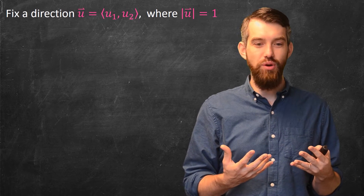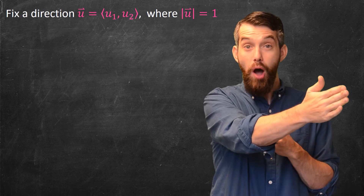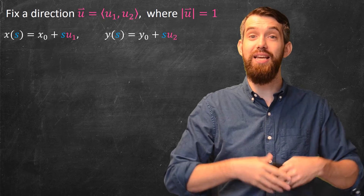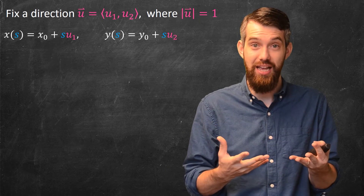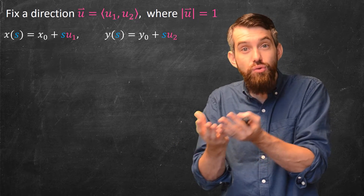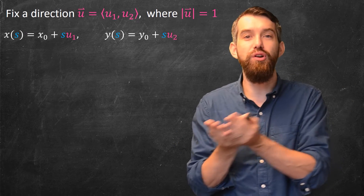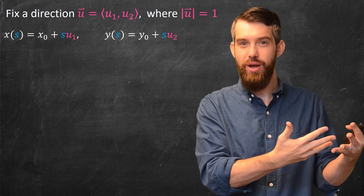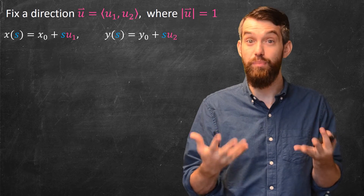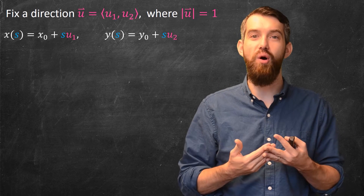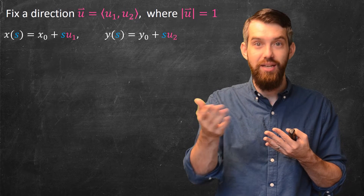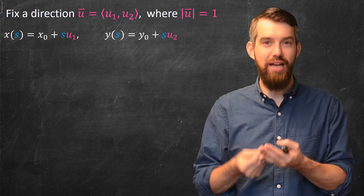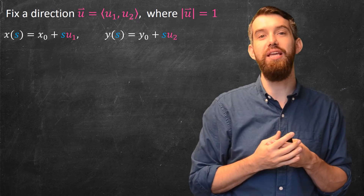I imagine starting at x₀, y₀ and going off in this direction, parametrizing my points as follows: x depends on s, starting at x₀ and moving in the direction u₁ by amount s; likewise y depends on s, starting at y₀ and adding u₂ times s. As s increases I start at x₀, y₀ and move along in the u direction.